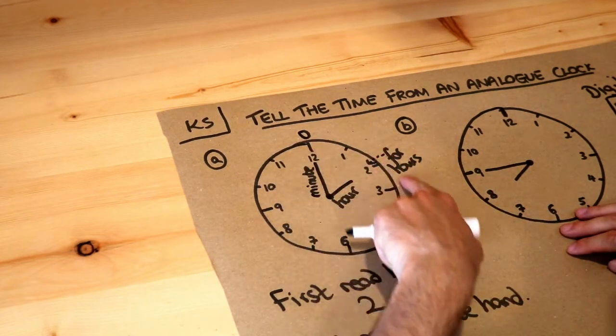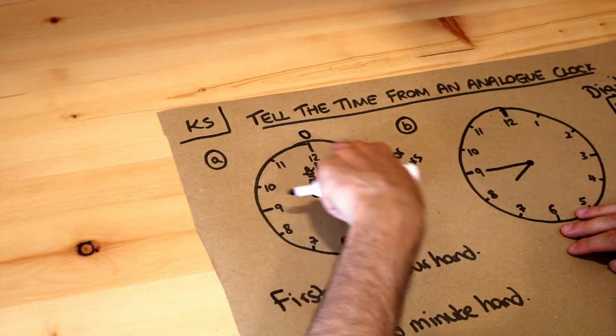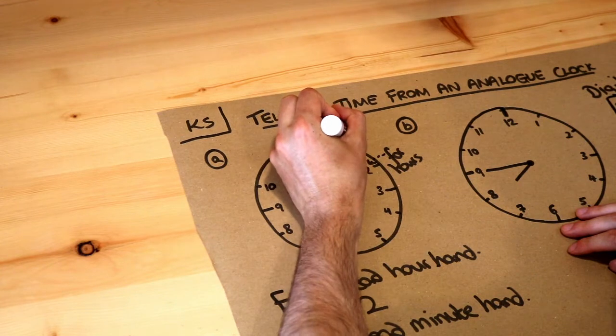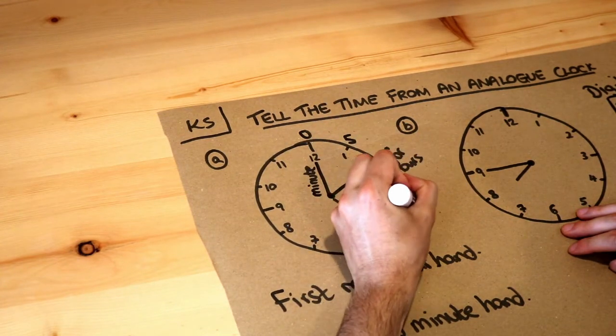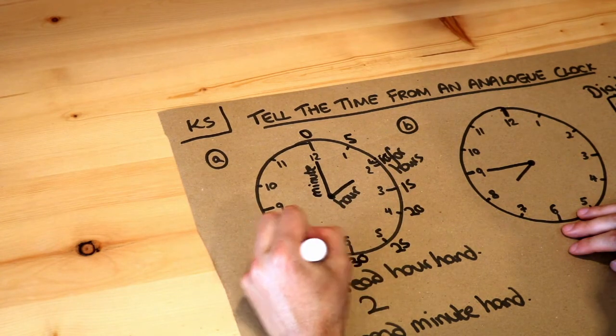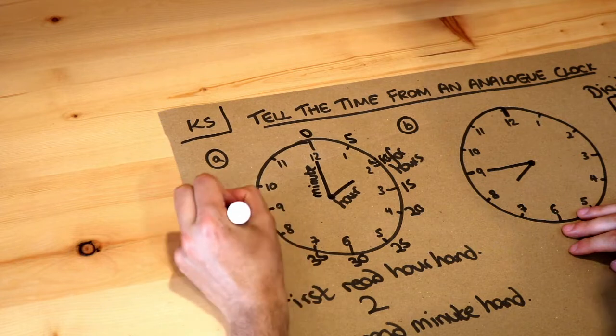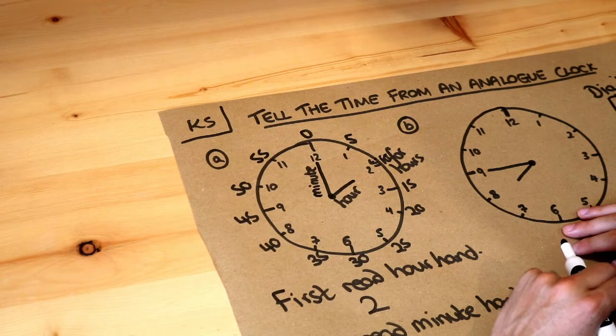We work round clockwise because that's the way a clock hand goes. So we go up in 5s: 5 minutes, 10 minutes, 15, 20, 25, 30, 35, 40, 45, 50, 55, and then we get back to 0 again.